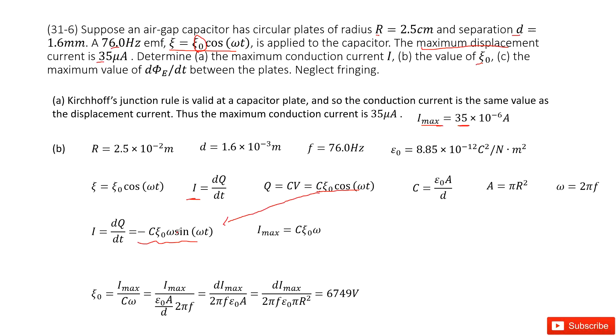Now in this equation, you can see the current is a function of time t. So the maximum value for the current i should be C epsilon naught omega. Now in this equation, you can see I_max is given.